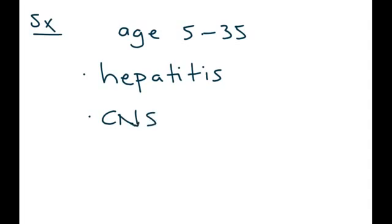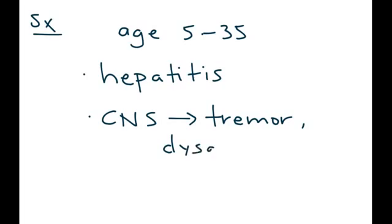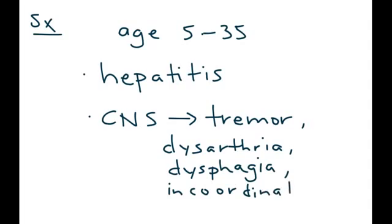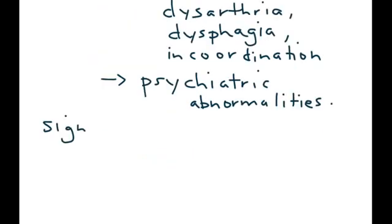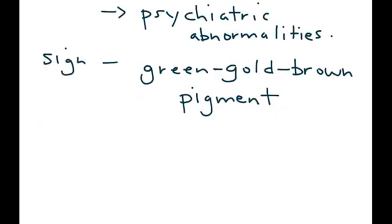The next set of symptoms involves the central nervous system because of the copper traveling to the brain. Those symptoms include tremor, difficulty speaking, difficulty swallowing, and problems with coordination. Patients can later also develop psychiatric abnormalities.